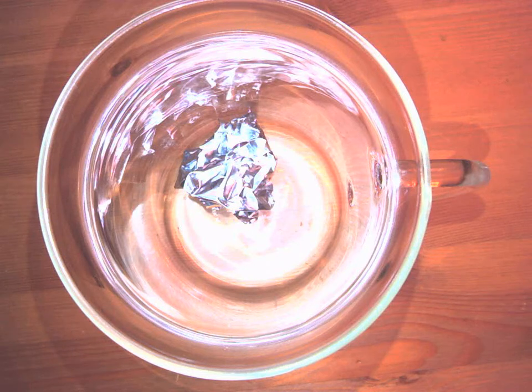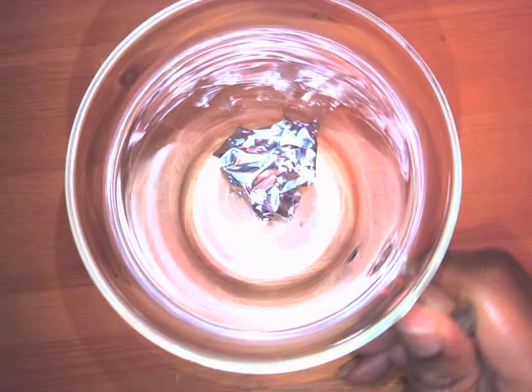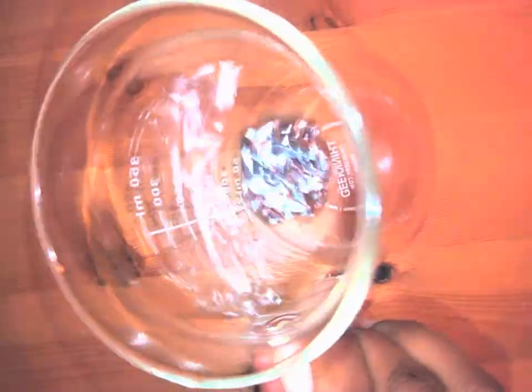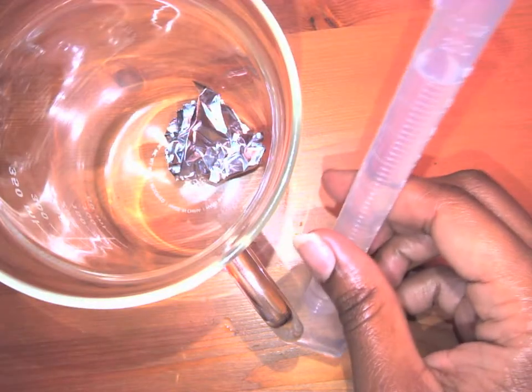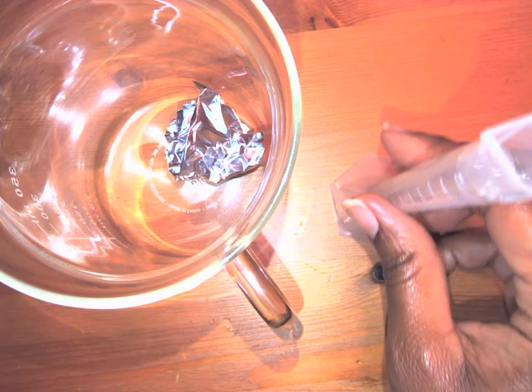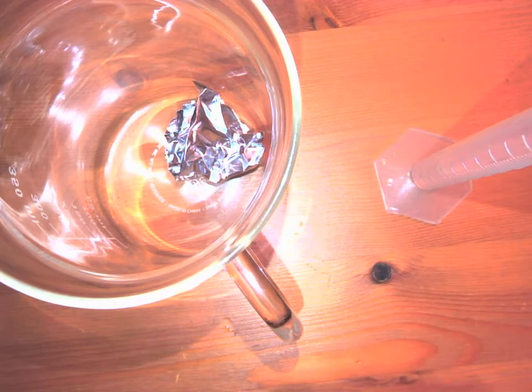Hi, welcome to the vinegar and aluminum foil demo. Right now I have a piece of aluminum foil inside a beaker, and I also have 10 milliliters of vinegar, which is also known as acetic acid.